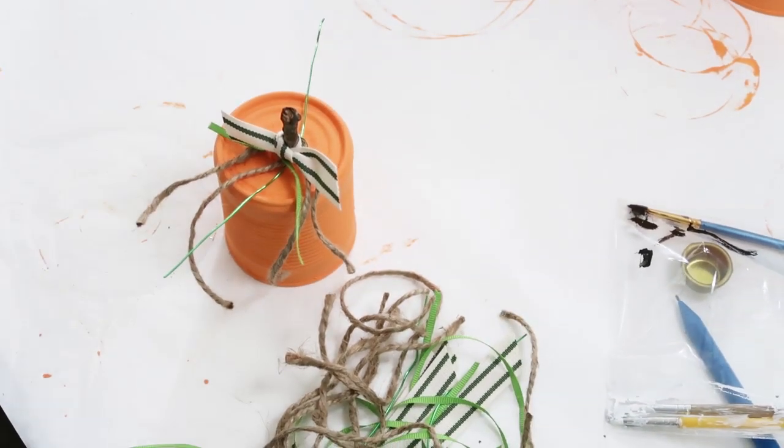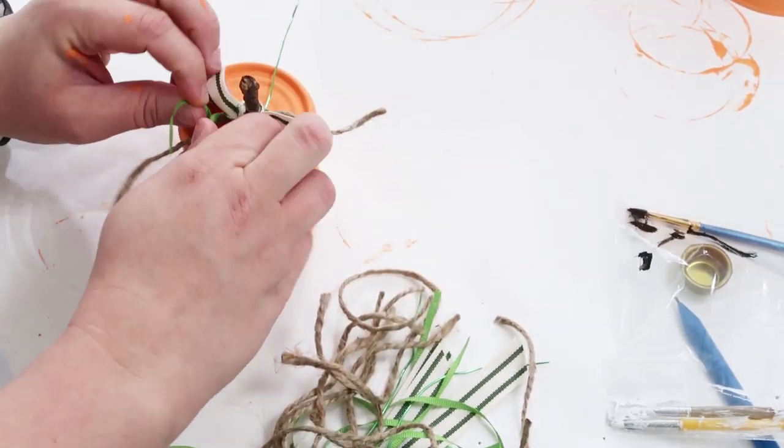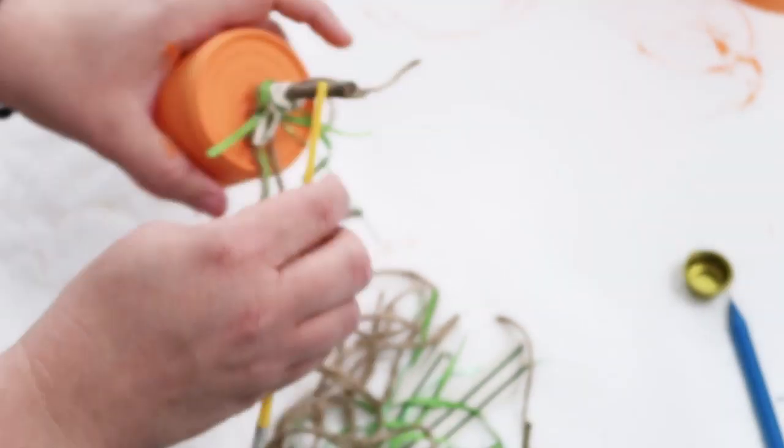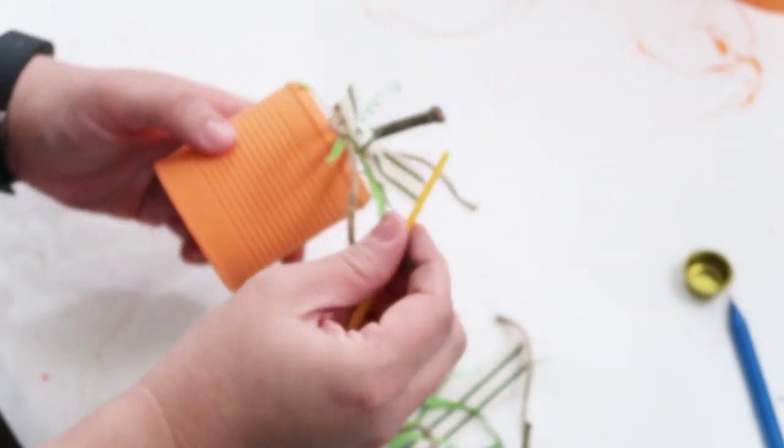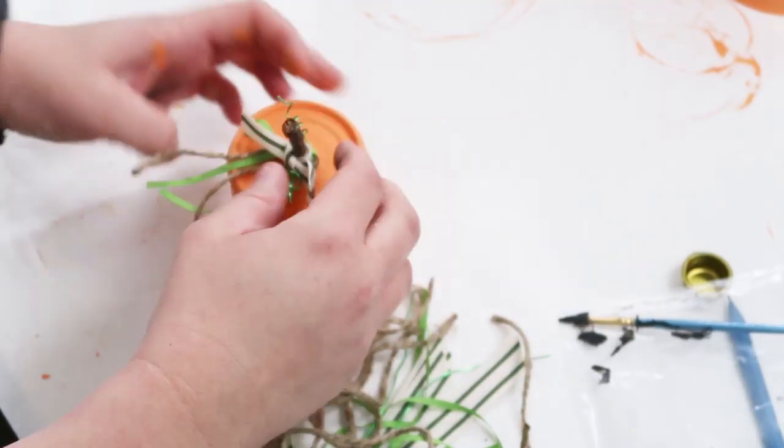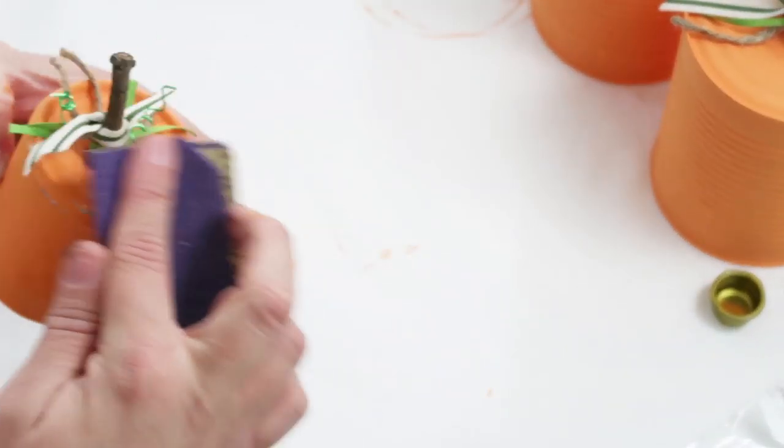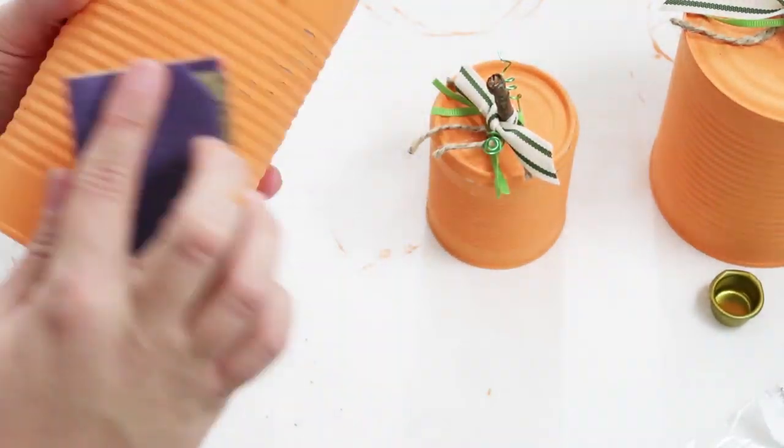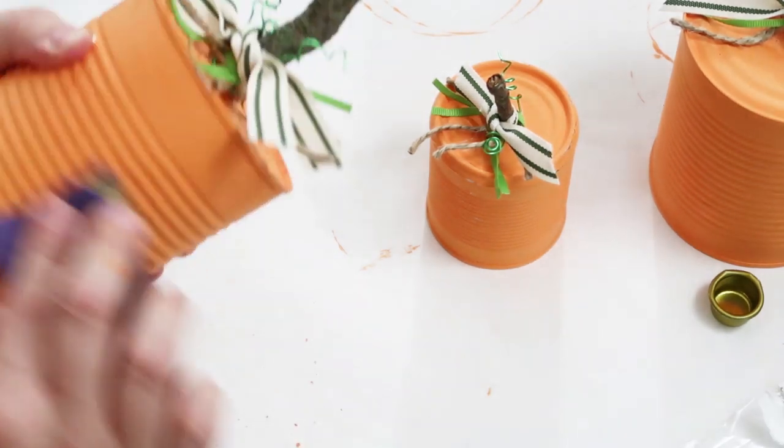Now I will say I did pick up the wire at Walmart in their craft section but you can find colored wire anywhere and I just loved how it looked with those little curly cues coming up from the wire with all the twigs and the ribbon. It just made it look so adorable for this Halloween upcoming season and for fall. And then to finish off that nice rustic look I took some sandpaper and just kind of went over it lightly pulling off some paint here and there.